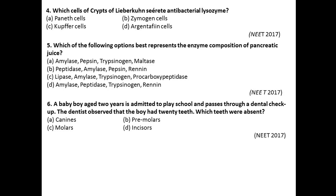Question number five: Which of the following options best represents the enzyme composition of pancreatic juice? Pancreatic juice contains amylase, lipase, trypsinogen, and procarboxypeptidase. So according to this, the answer is option C.